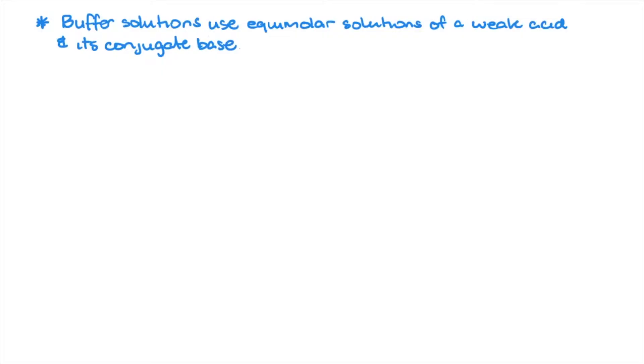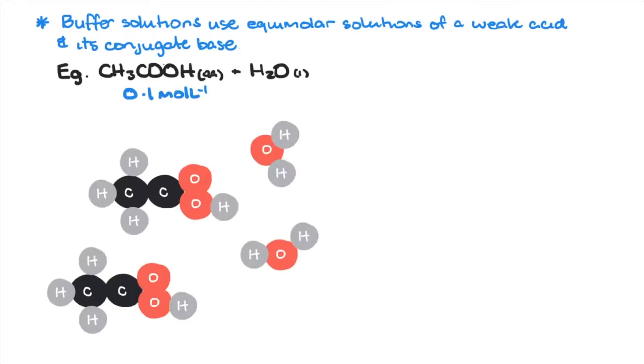As a recap, buffer solutions use equimolar solutions of a weak acid and its conjugate base. As a lab example, we use 0.1 molar of acetic acid in roughly the same molar concentration of the acetate ion.